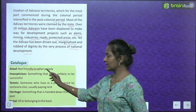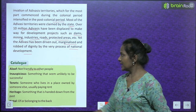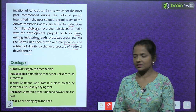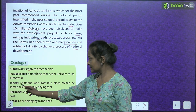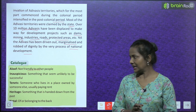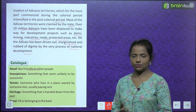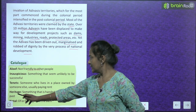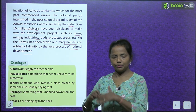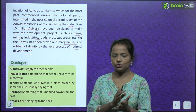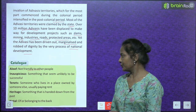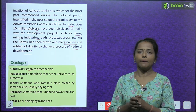Now the catalogue. Aloof means not friendly to other people. Inauspicious means something that seems unlikely to be successful. Tenants: someone who lives in a place owned by someone else, usually paying rent. Heritage: something that is handed down from the past.